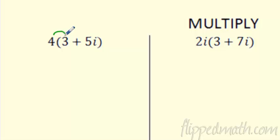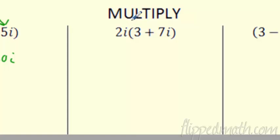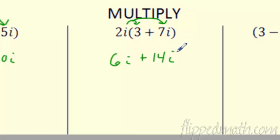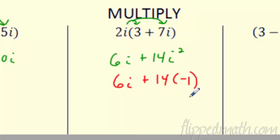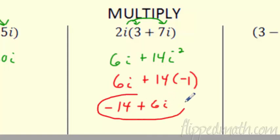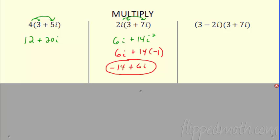For multiplication, you can distribute. Real times real: four times three is twelve. Four times 5i gives 20i, no problem. Then 2i times three is 6i. Then 2i times 7i gives 14i squared. The key from last section: i squared equals negative one, so that's 14 times negative one, which is negative fourteen. Putting in standard form: negative fourteen plus 6i.